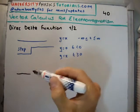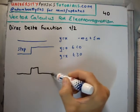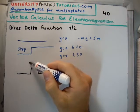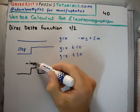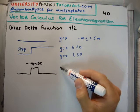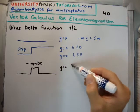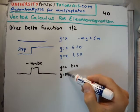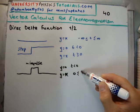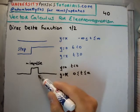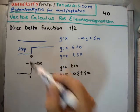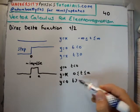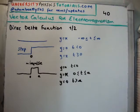Now what happens if we have a new function which turns on, it's off for a long time, then it turns on, it's on for a short period of time, and then it turns back off and stays like that for the rest of time? So we would have y equal to zero for t less than zero, y equal to x for time between zero and a, and y equal to zero for t greater than a.